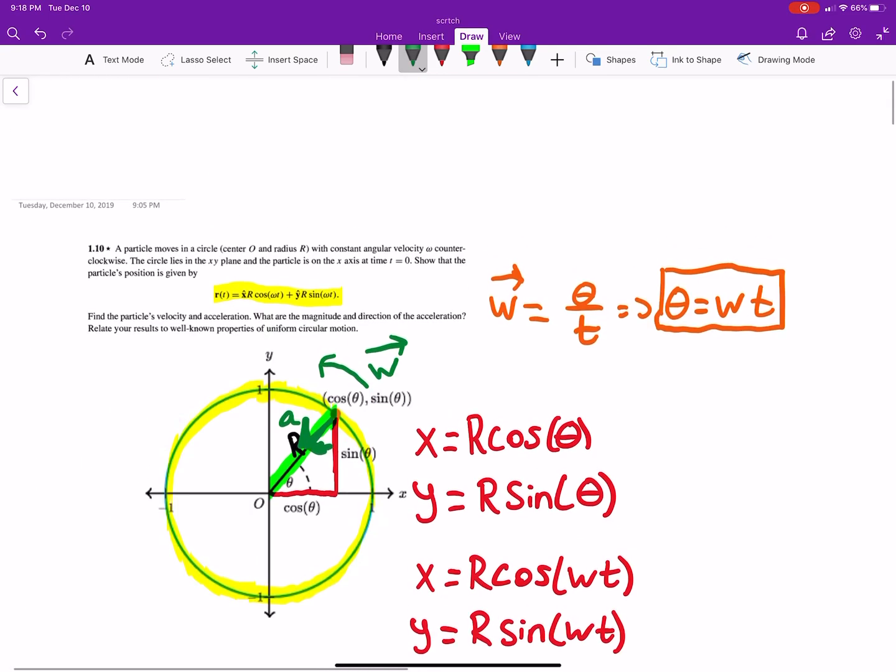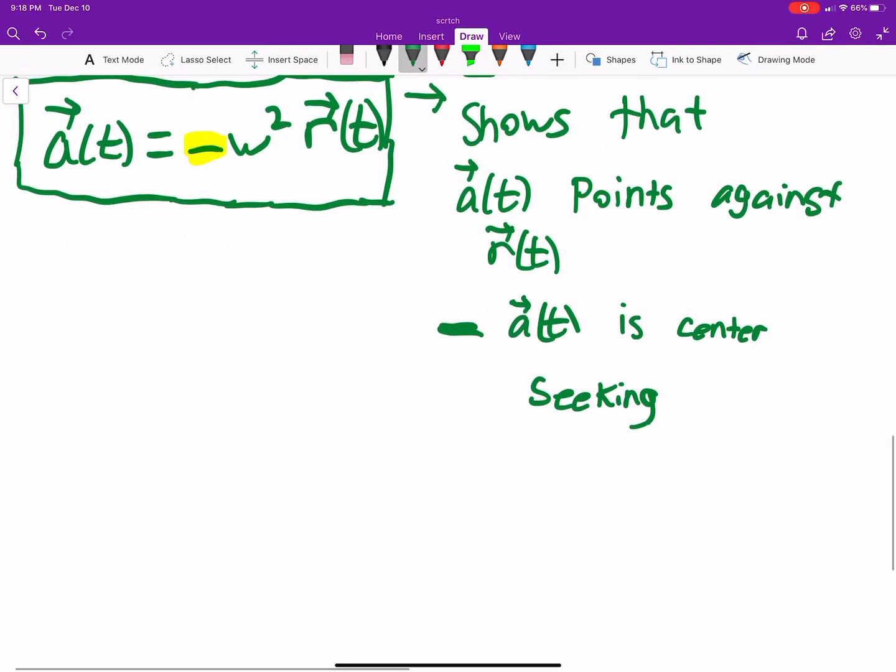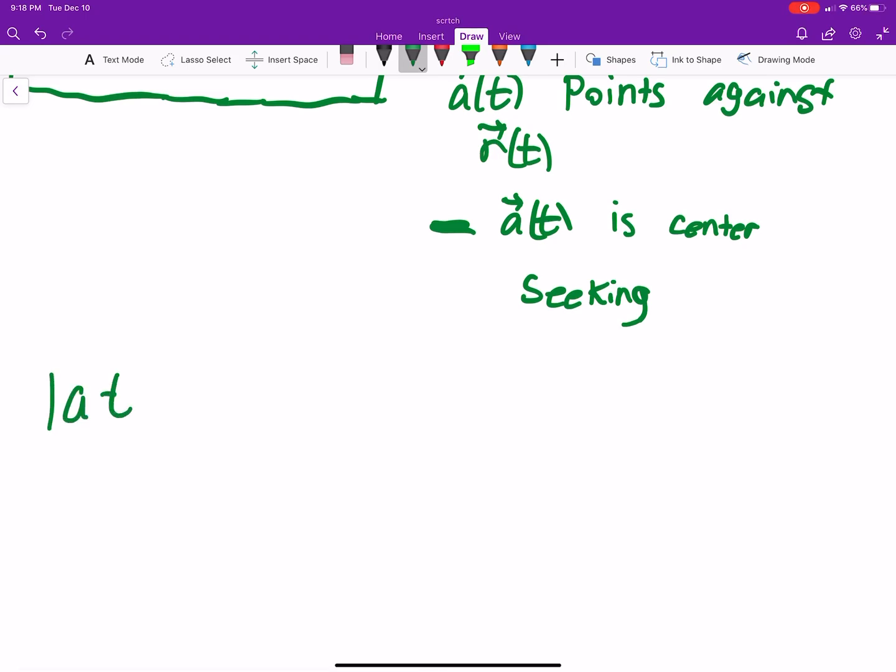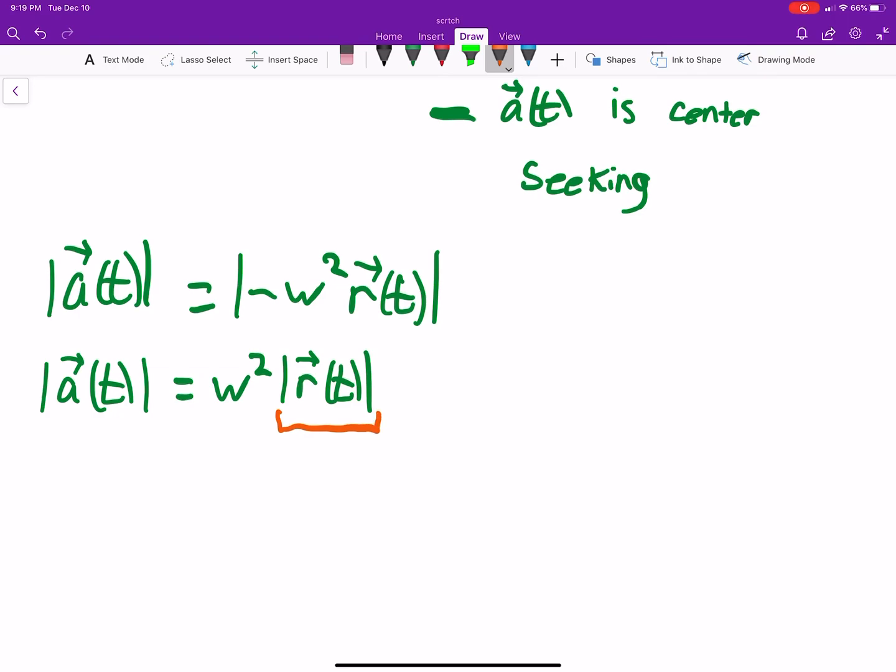What is the magnitude and direction? Well, we talked about the direction. The direction is just it's going to be opposing r of t. What's the magnitude of a of t? That's just the magnitude of negative omega squared r of t, just putting that in there, which is equal to positive omega squared absolute value r of t. Well, what's the absolute value of r of t? The absolute value of r of t is equal to the square root of r sub x squared plus r sub y squared. These are technically functions of time, so I should include that.